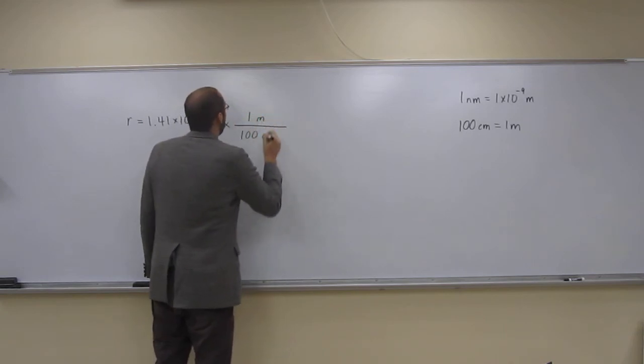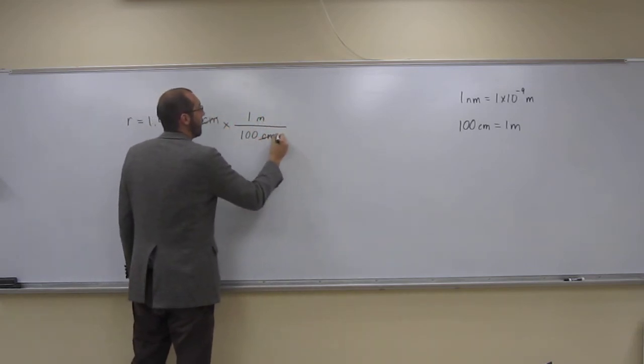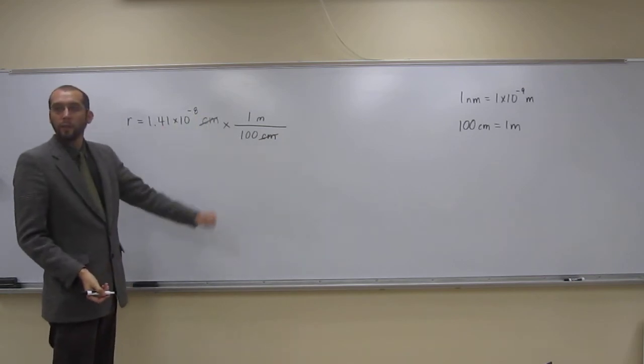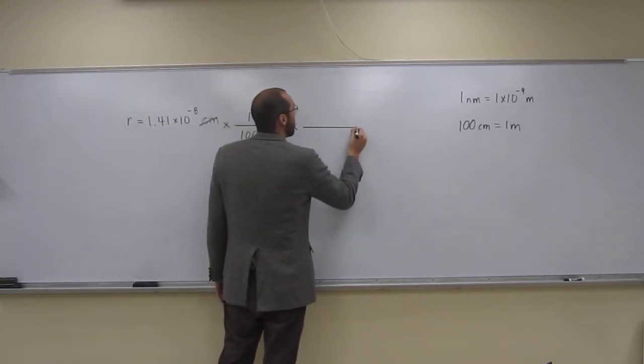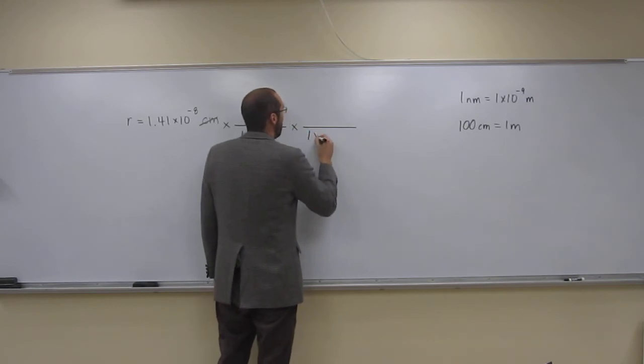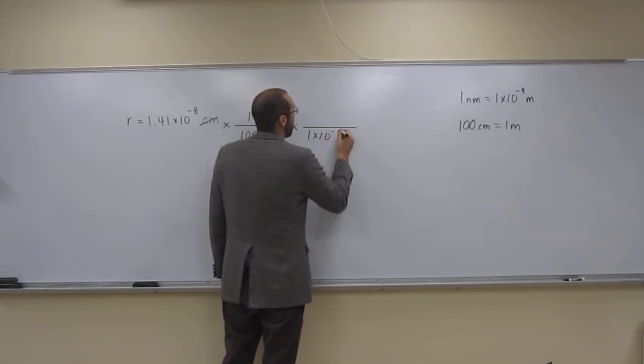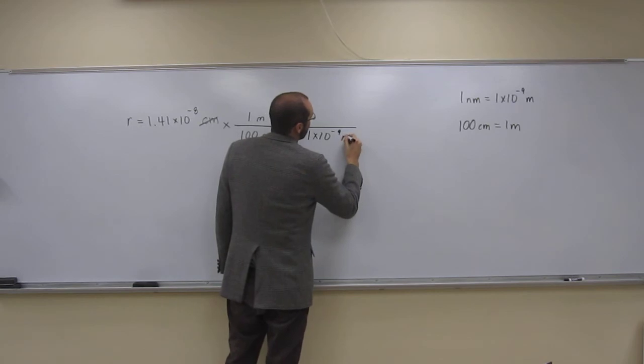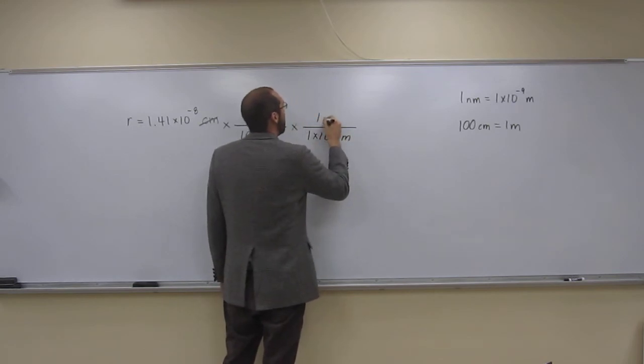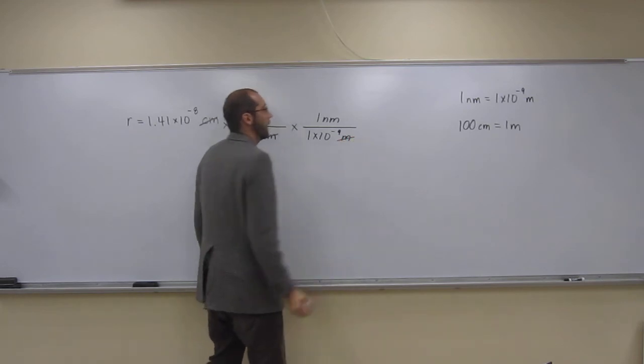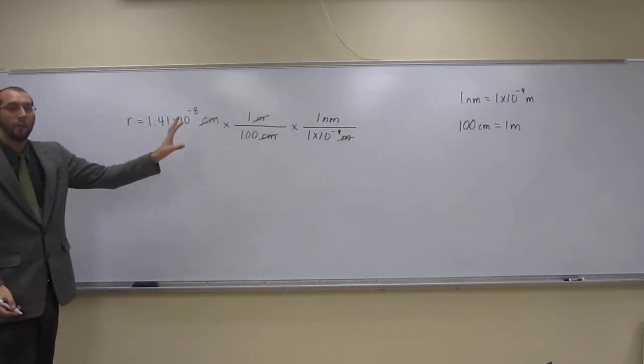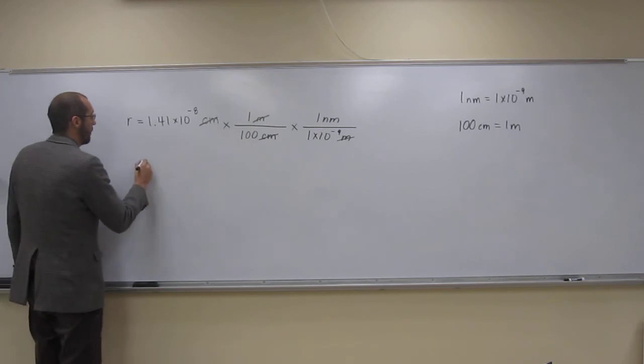One centimeter, one meter, and what happens? Cancel, cancel, right? So we're on meters. We don't want meters, we want nanometers. So what are we going to do? 1 times 10 to the negative 9th meters is 1 nanometer. Cancel, cancel. Right? So what are we in now, units of meters, right?